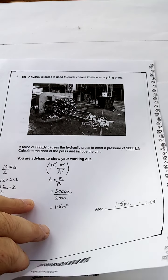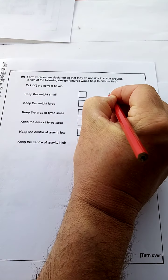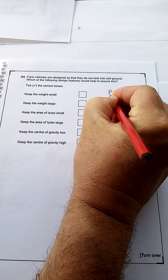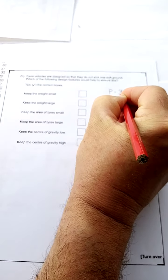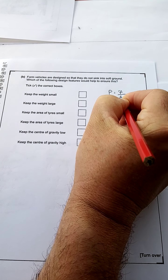So let's look at the second part. Farm vehicles are designed so that they do not sink into soft ground. Which of the following design features would help to ensure this? So in other words, we're going to look at the pressure. So there's no reason that we can't write down pressure equals force over area. So I want the pressure small.